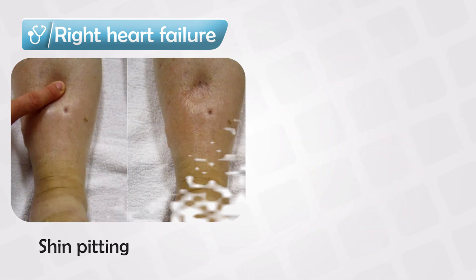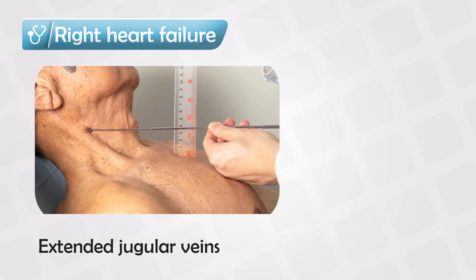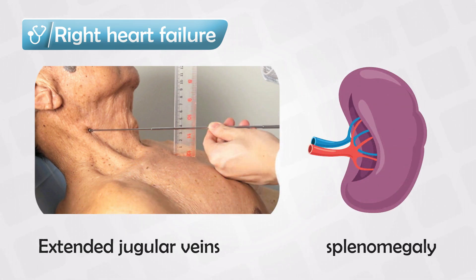So the patient has pitting edema in their shins, and also pitting edema in the sacral area. Eventually, the liver will also be congested, and so we see signs of extended jugular vein. And also, because of the liver congestion, we see spleen enlargement.